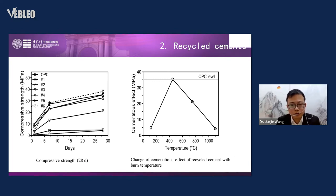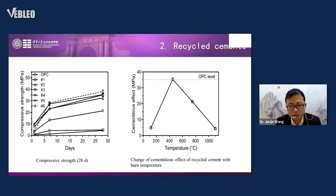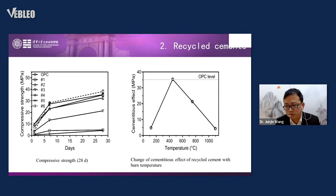Here we compare the compressive strengths of six types of recycled cement and OPC. Numbers two, five, and six show the best compressive strength, all burned under 450°C. The cementitious effect is optimum around 450°C, and when it reaches 750°C it decreases significantly. There could be an optimal temperature between 450°C and 750°C, and we are continuing related research.